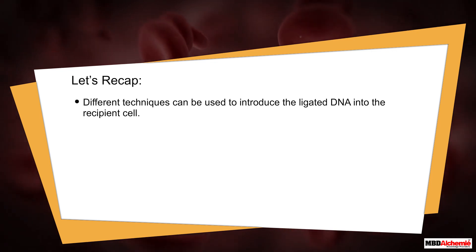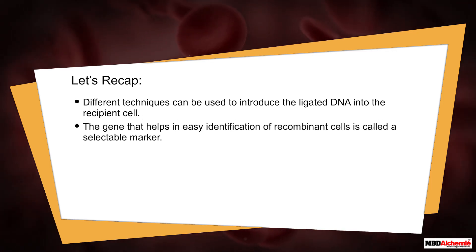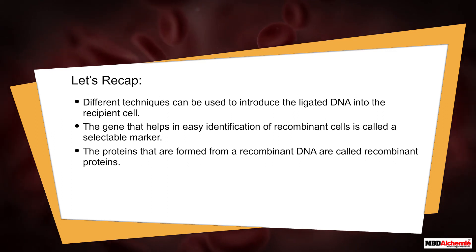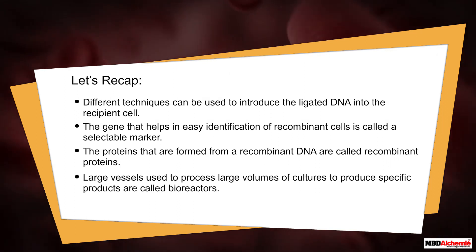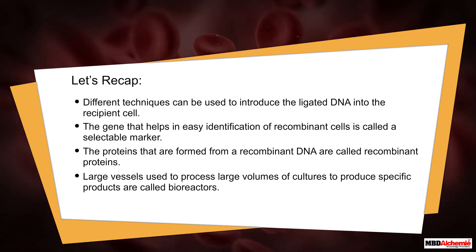The gene that helps in the easy identification of recombinant cells is called a selectable marker. The proteins that are formed from a recombinant DNA are called recombinant proteins. Large vessels used to process large volumes of culture to produce specific products are called bioreactors.